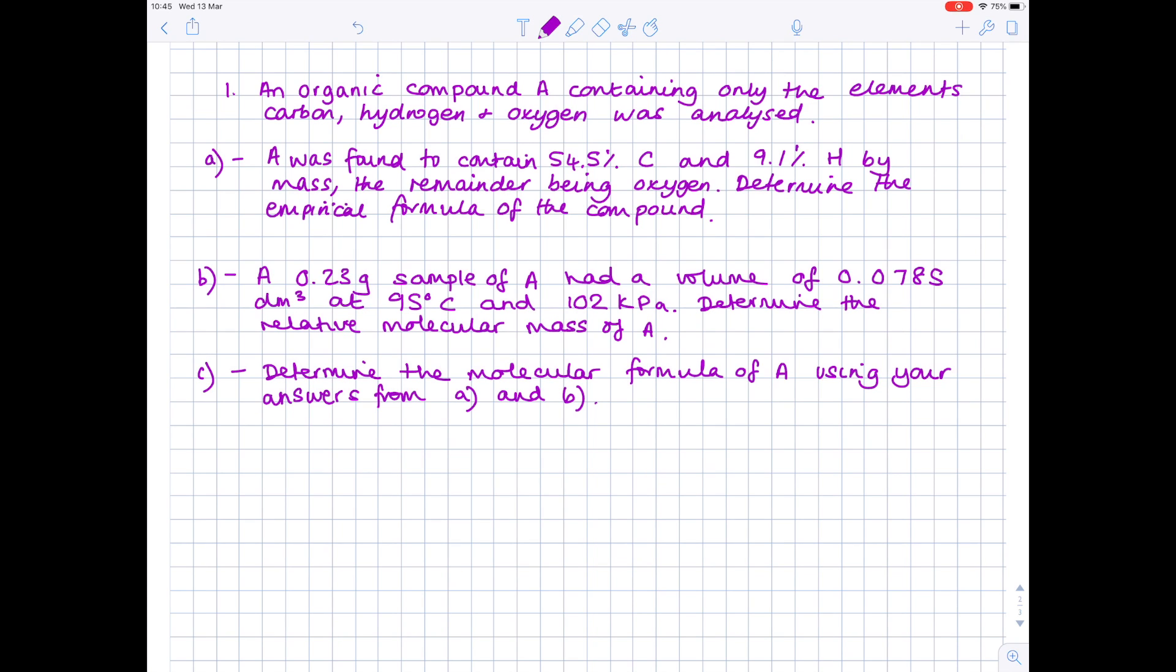So an organic compound A containing only the elements carbon, hydrogen and oxygen was analysed. A was found to contain 54.5% carbon and 9.1% hydrogen by mass, the remainder being oxygen. We're asked to determine the empirical formula. In part B, a 0.23 gram sample of A had a volume of 0.0785 decimetres cubed at 95 degrees Celsius and 102 kPa, and we're asked to determine the relative molecular mass of A. Then lastly, we're combining our answers from A and B to find the molecular formula.